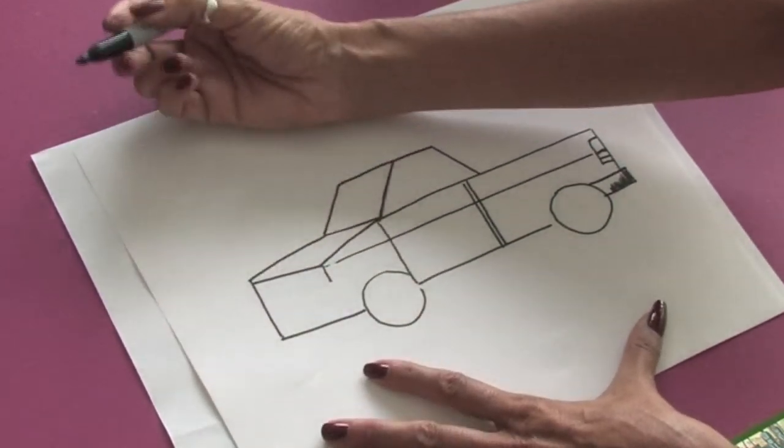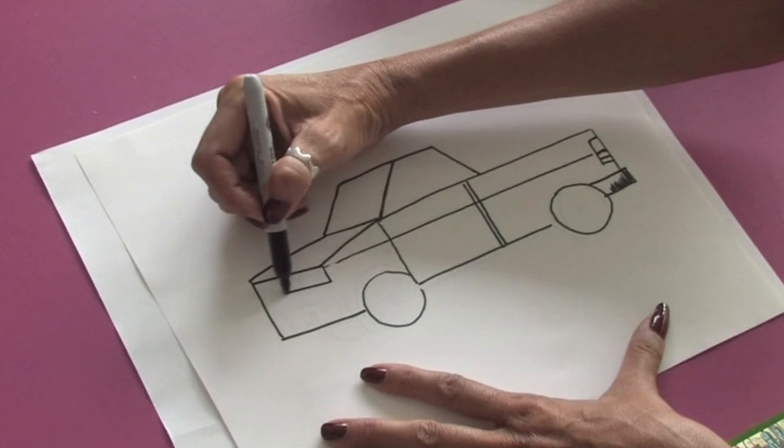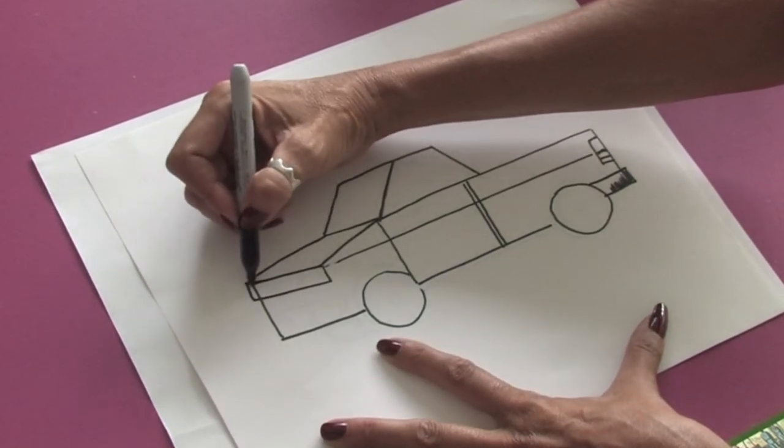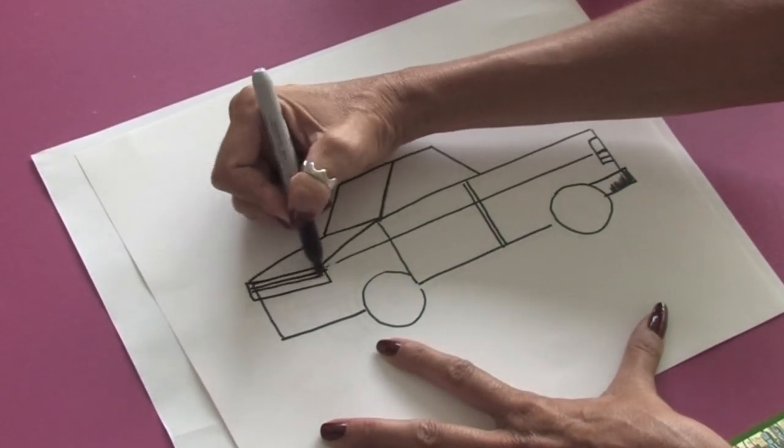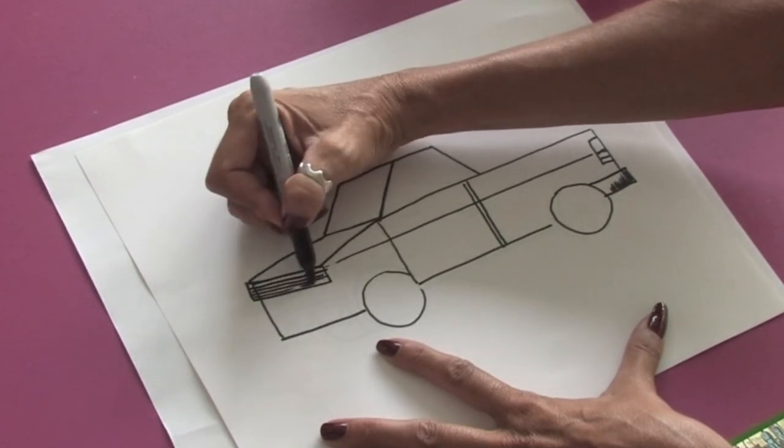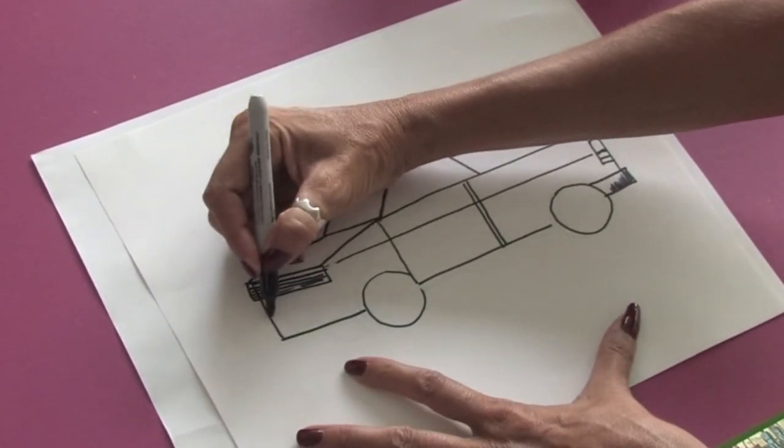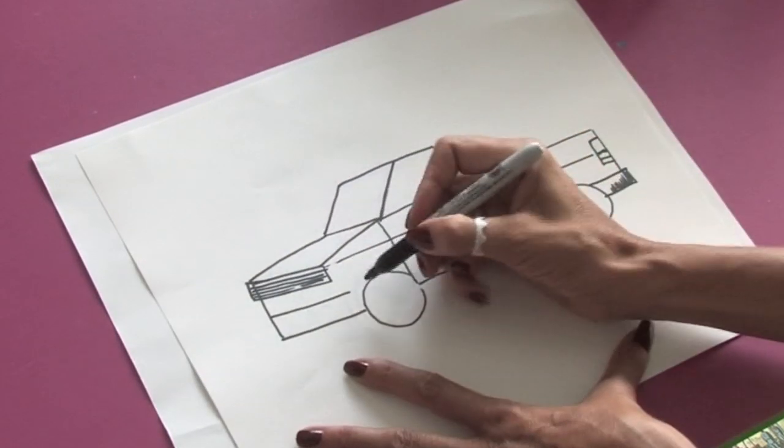And we'll come back to the front of the truck and work on the front grill. So again another rectangle, and we can just add some lines in here to show that grill. And another line down here.